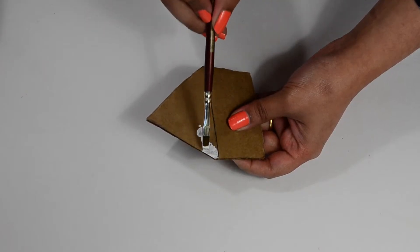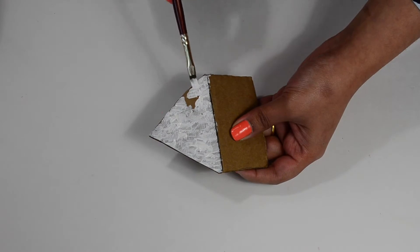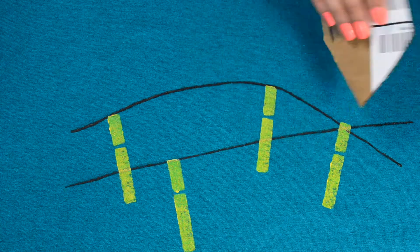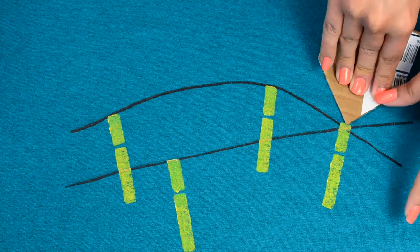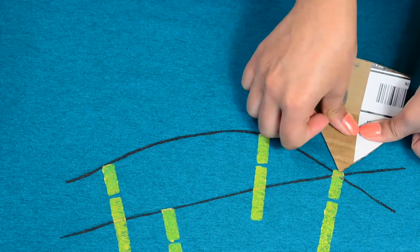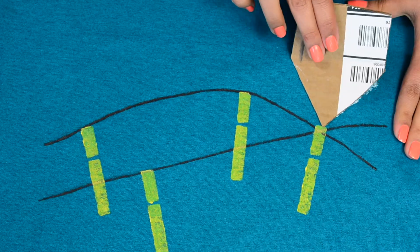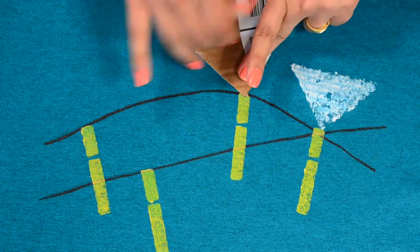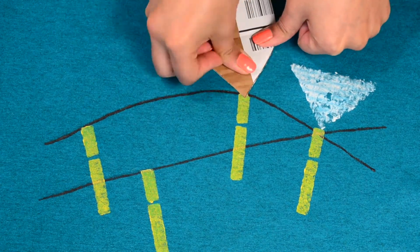Take white paint and dab it on this triangle part and then we will stamp it below the cloth pin stamp like I am doing here. Apply more paint for each and every stamp.